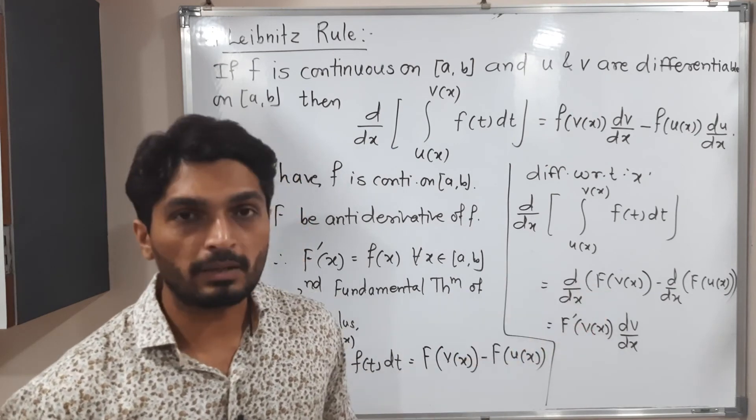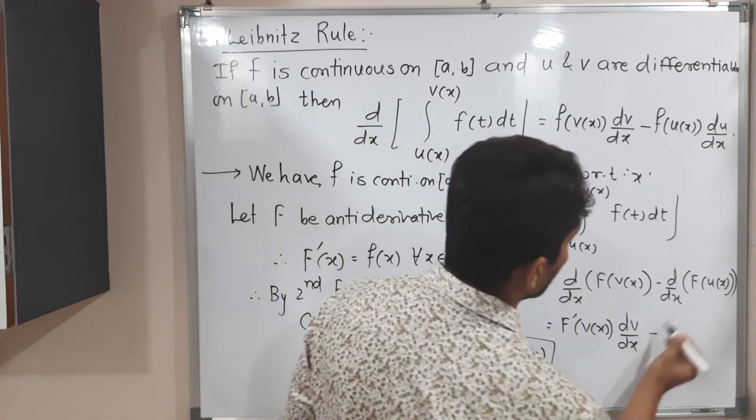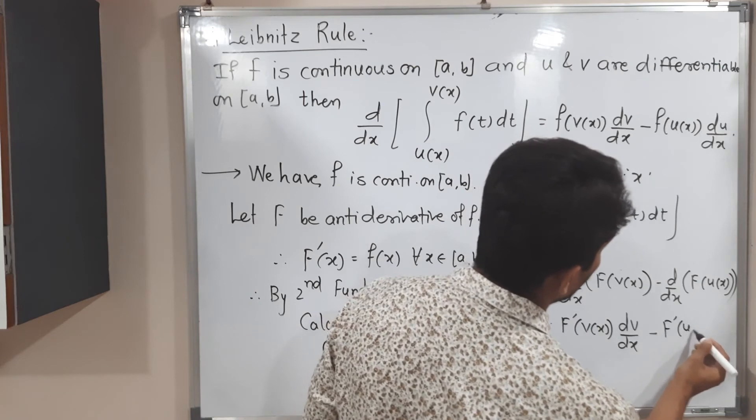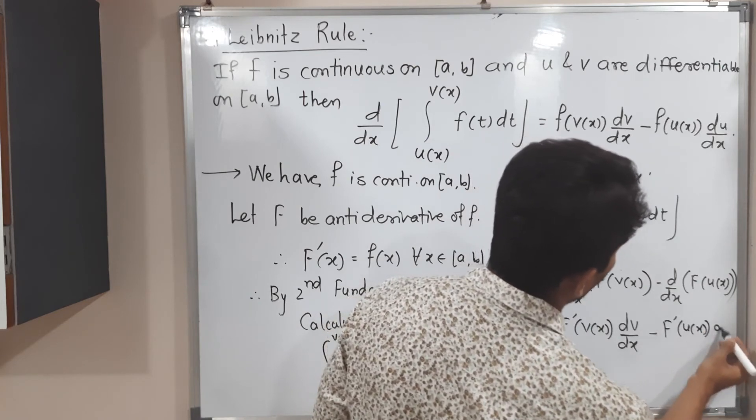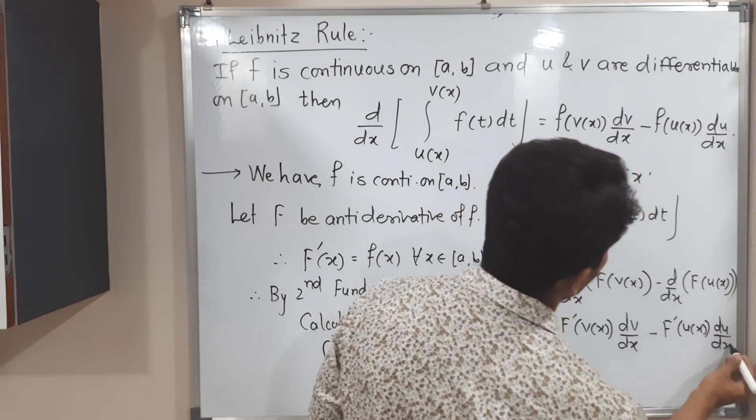Derivative of outer function after that again derivative of inner function. So the same thing I will do for the second bracket. So what will I get? Derivative of capital F I will write F dash of u of x and again I'm supposed to write derivative of u with respect to x.